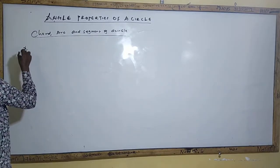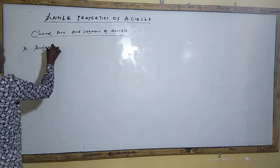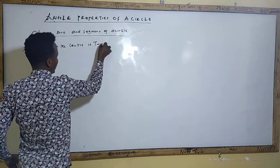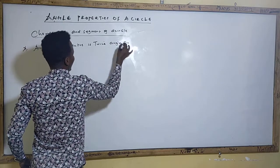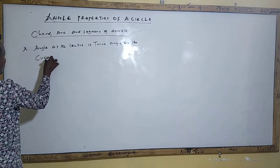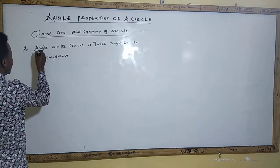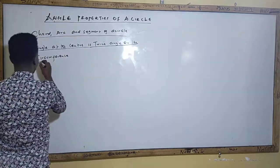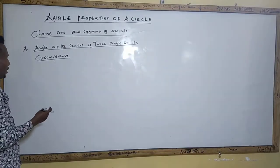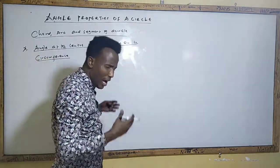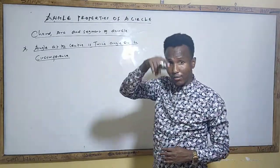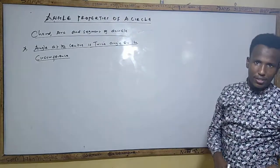Let's start with the first concept: angle at the center is twice the angle on the circumference. Conversely, the angle on the circumference is equal to half the angle at the center. Let me draw a circle to show you that.